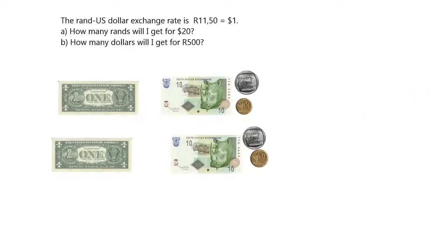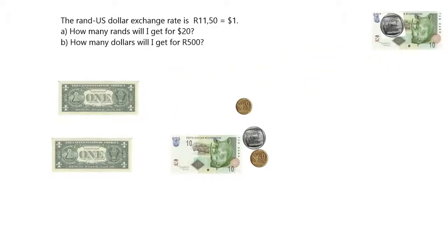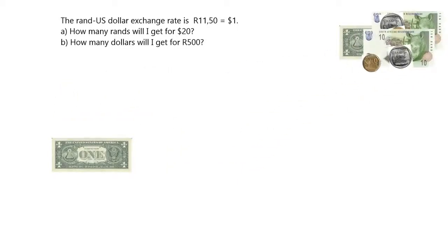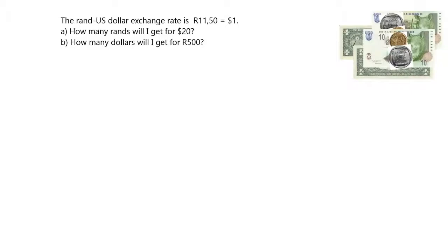If you wanted to buy $2, then you'd have to hand over two lots of R11.50. If you want to buy $3, you'd have to hand over three lots of R11.50. You can see that these exchange rates work very similarly to everything we've been doing with ratio and rates up until now. Let's go ahead and do some calculations.